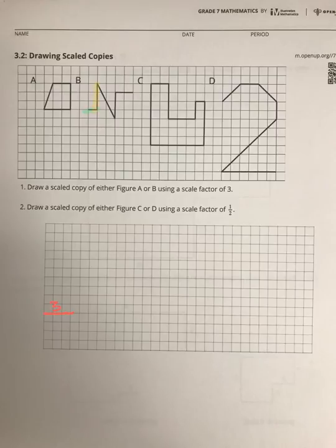And then for the next side, I'm gonna look at this side right here, hopefully you can see that, and since that's three long, I'm gonna multiply that by a factor of three. Three times three is nine, so this is gonna be two, four, six, eight, nine long.